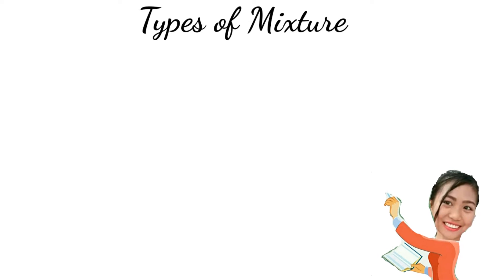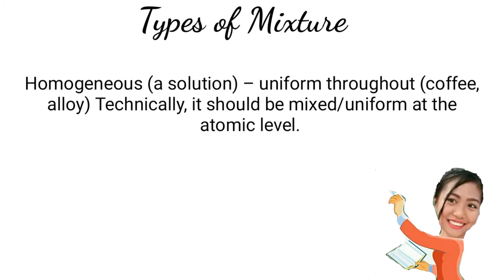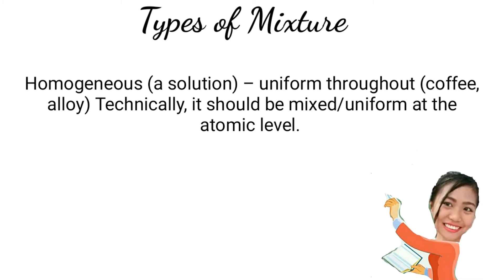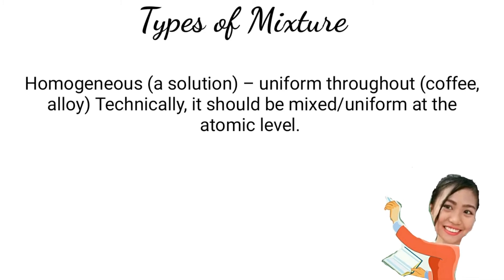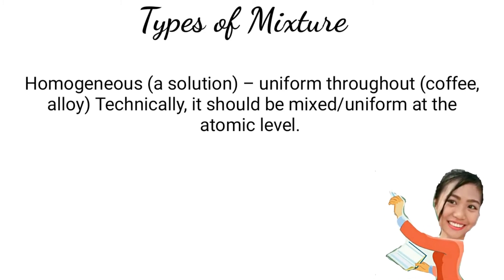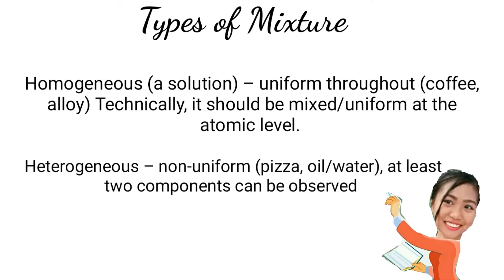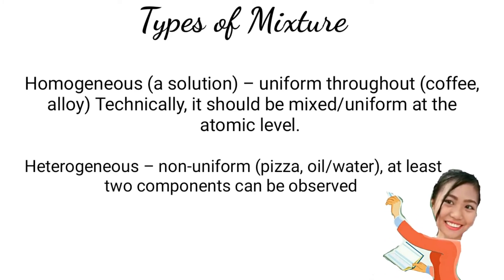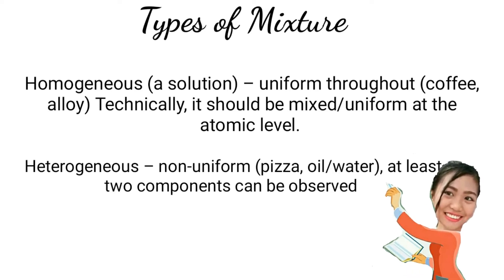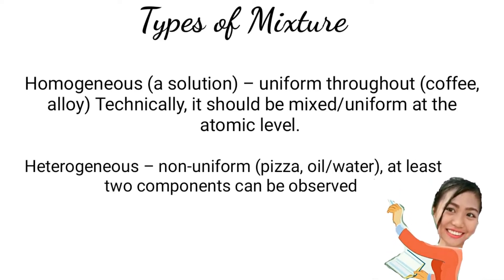There are two types of mixture. A homogeneous mixture, or solution, is uniform throughout — like coffee and alloy — and should be mixed uniformly at the atomic level. A heterogeneous mixture is non-uniform, like pizza and oil and water, where at least two components can be observed.